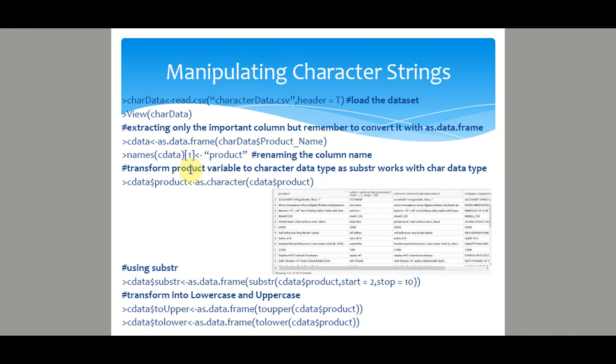Then we have to transform the product variable to a character data type, as string functions like substr work with the character data type. Now using substr, we will extract only the value starting from second character to tenth character value, hence very useful when we need to extract only the important subject.